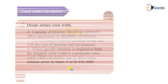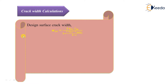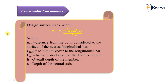We will see Annexure F of IS 456, which is on page number 95. The design surface crack width formula is given by: WCR = 3 × ACR × εM / (1 + 2 × (ACR − C_minimum) / (H − X)), where ACR is the distance from the point considered to the surface of the nearest longitudinal bar, C_minimum is the minimum cover to the longitudinal bar, H is the overall depth of the member, and X is the depth of the neutral axis.